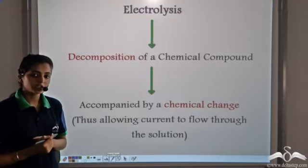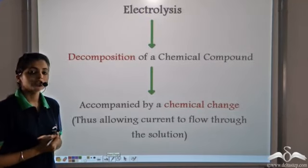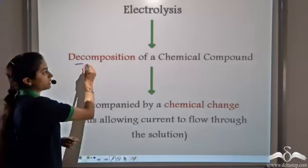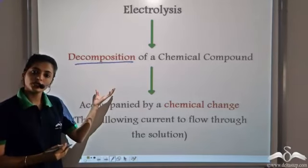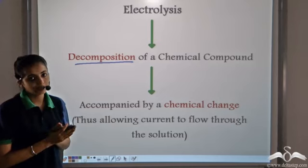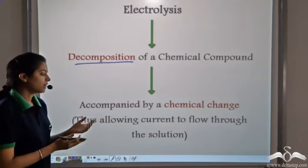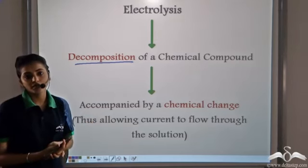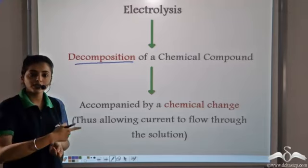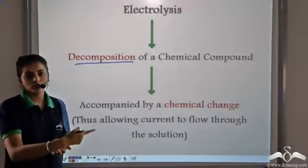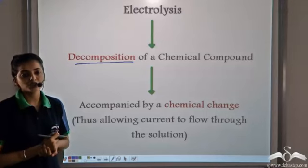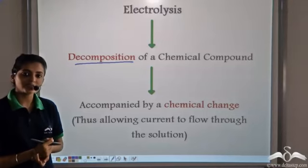To summarize: electrolysis is the decomposition of a chemical compound — the electrolyte — which dissociates into cations and anions. This is accompanied by a chemical change that allows the flow of current through the electrolytic solution and the passage of electricity. This process is known as electrolysis.